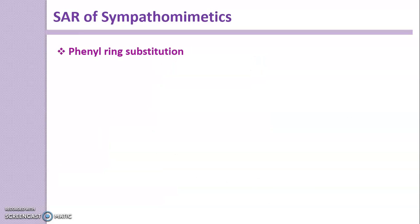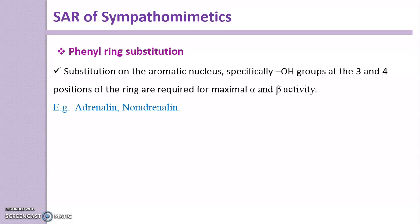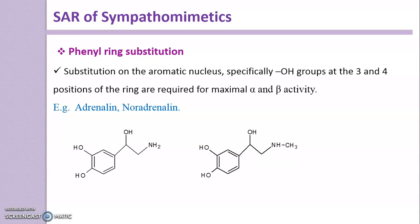Now, the first point in SAR is phenyl ring substitution. Substitution on the aromatic nucleus — especially hydroxyl (OH) groups at the third and fourth positions of the ring — is required for maximal alpha and beta activity. Examples are Adrenaline and Noradrenaline. In both cases, hydroxyl groups are present at the third and fourth positions, which is the basic requirement for the drug to bind to alpha and beta receptors and produce activity.